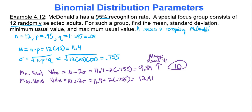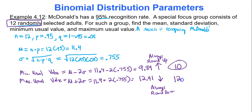For the maximum usual value, take mu and add the standard deviation twice: 11.4 plus 2 times 0.755. You get 12.91. So if something's 13, that's too high. For the maximum usual value you always round down. Besides, we can at most have only 12 people total, so another reason to bring the maximum usual value down to 12 — never exceed your number of trials.